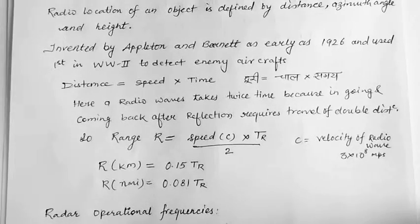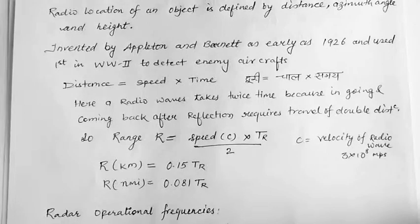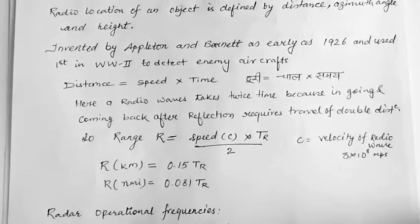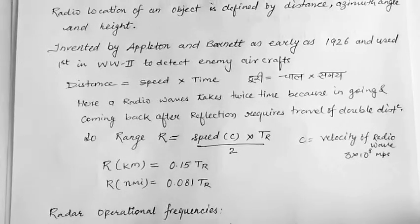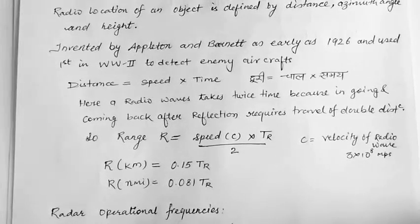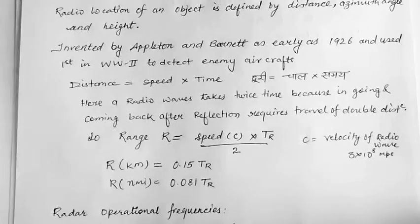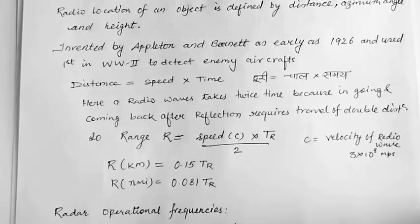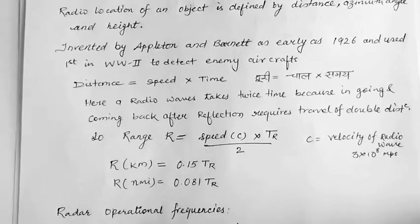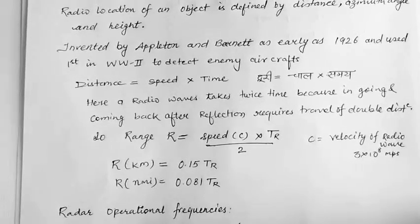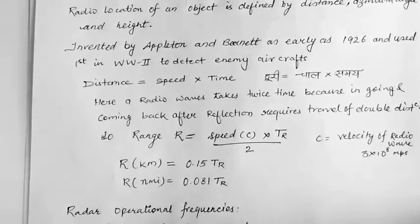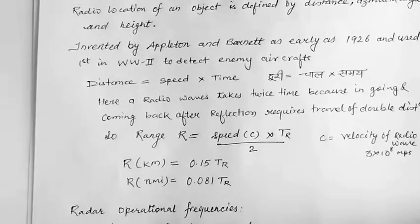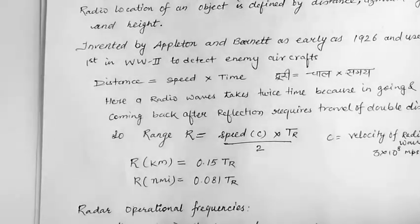C is the velocity of radio waves or light which is 3 into 10 to the power 8 meter per second. Put in this value and we can calculate the range in kilometers by 0.15 times TR or nautical miles 0.081 times TR. This is the simple fundamental of radar for detecting and ranging the objects.